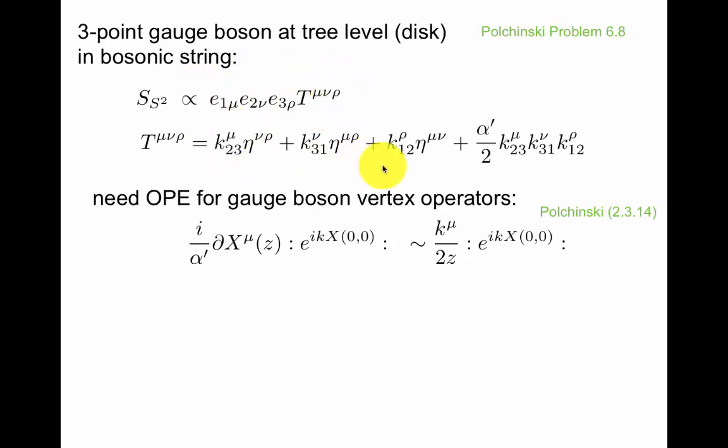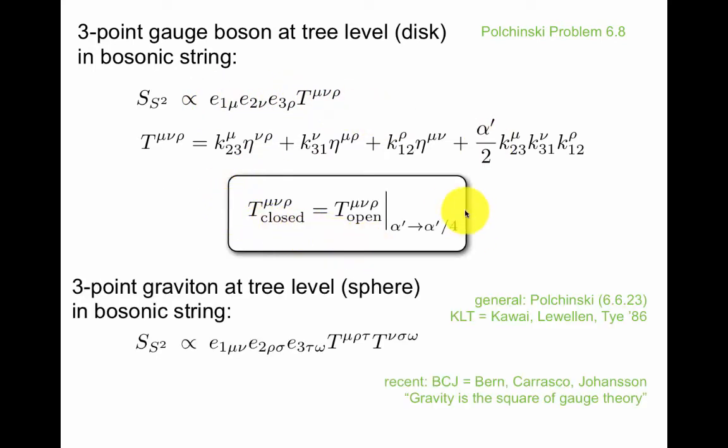At this point, we haven't put any Yang-Mills gauge matrices. Doing that would just amount to multiplying this by constant gauge matrices. Now, the amazing thing is that for the closed string, you just replace alpha prime by this, and you get the amplitude for three-point graviton at tree level. So you can think of this as just an observation. Do the calculation in one case, you get this. Do the calculation in the other case, you get that. And you notice that one is just the square of the other. This is discussed in general in Polchinski. It was observed in the 80s. And recently, there's been a lot of activity with this in field theory, that maybe graviton scattering can be understood as some generalized sense of square of gauge theory.